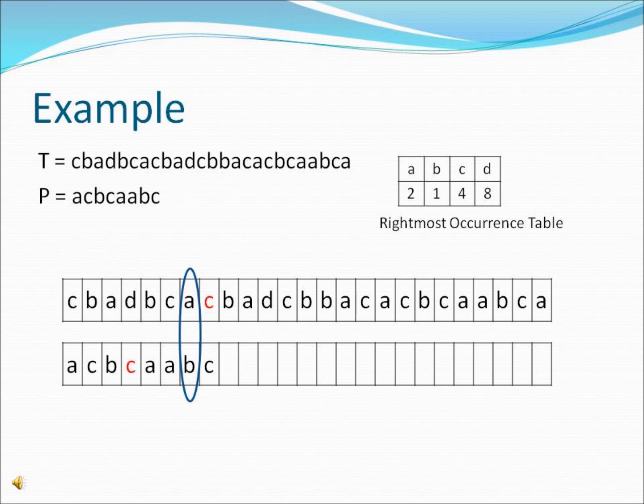So now we're going to run through a full example. The first step is to calculate the table. We do this by subtracting the position of the rightmost occurrence of each character from M, the length of the pattern, as shown on the previous slide.